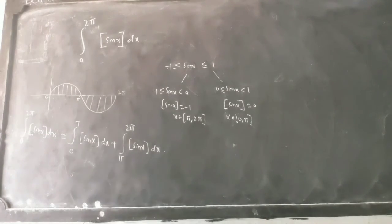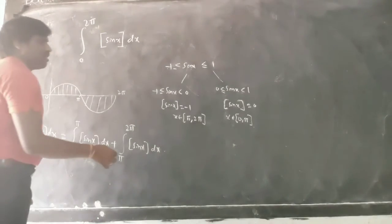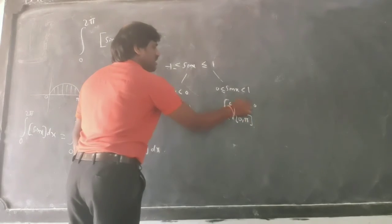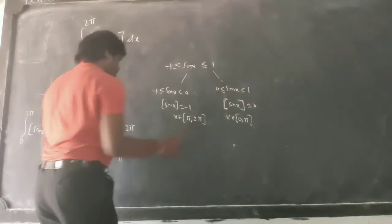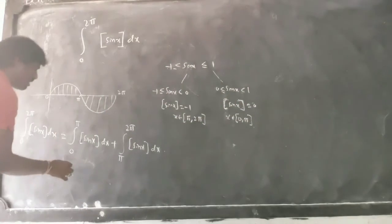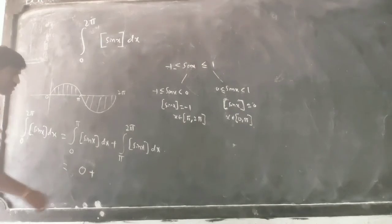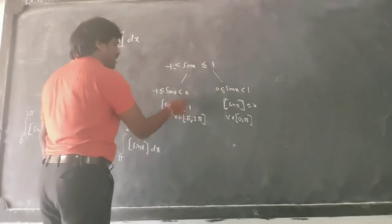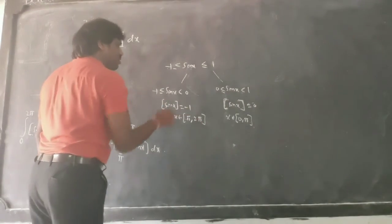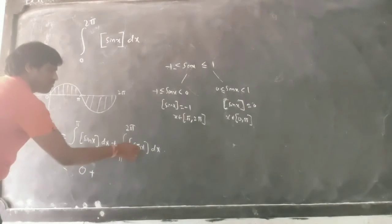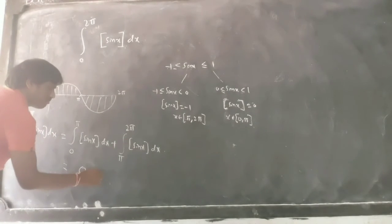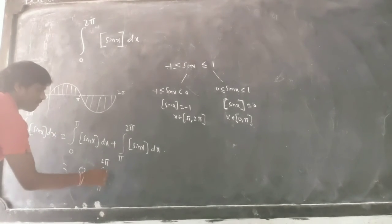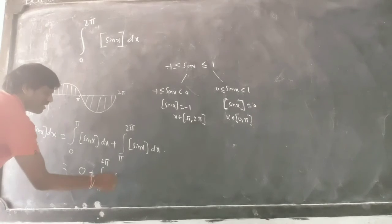From 0 to π, the greatest integer of sin x is 0, so that part becomes 0. From π to 2π, the greatest integer of sin x is -1, so that integral becomes integration from π to 2π of -1 dx.